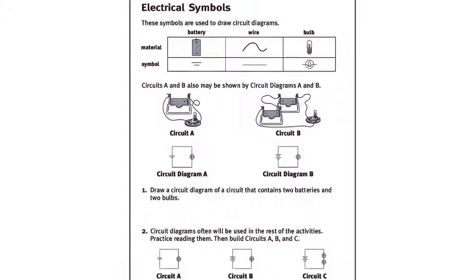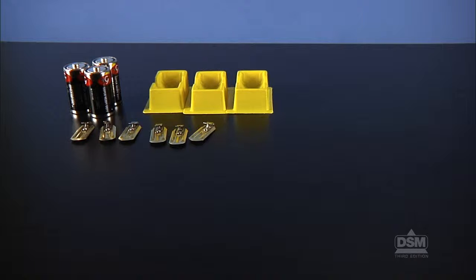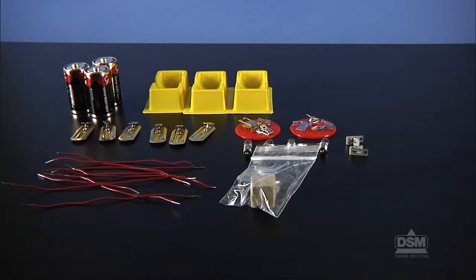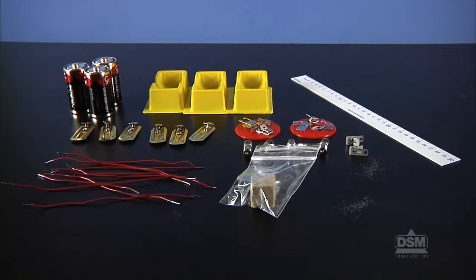Each student will need his or her copy of Activity Sheet 2. Each team of two will need three batteries, three battery holders, six electrical clips, two bulb holders, two number 41 bulbs, two number 48 bulbs, two Fondstock clips, nine pieces of insulated copper wire, a bag of modeling clay, a metric ruler, and two strands of steel wool.